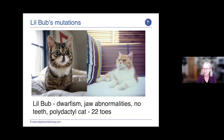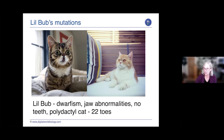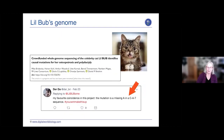Little Bub looks a little unusual — you can find her YouTube videos; she's pretty cute. She had a form of dwarfism that kept her small all her life, some jaw abnormalities, no teeth, and actually 22 toes — a lot more than a normal cat. Despite having no teeth, she could still eat regular dry hard cat food. She even had her whole genome sequenced through crowdfunding, which revealed the mutations causing her dwarfism and extra toes.